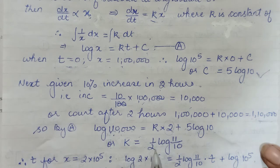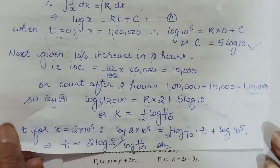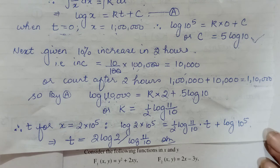And this 2 will go to the other side, will come as half. This we were evaluating our k. So we have got our k's value as half log 11/10.